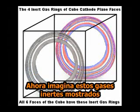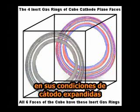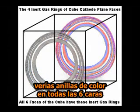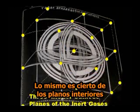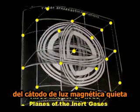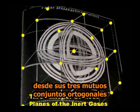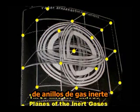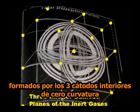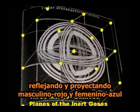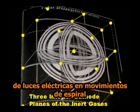Now imagine these inert gases as pictured in their expanded cathode conditions bounding all six faces of the cube — you would see colored rings on all six faces. The same is true of the interior cathode plane of still magnetic light. And here we see them creating a sphere from the three mutually orthogonal sets of inert gas rings formed by the three interior cathode planes of zero curvature, which act as internal mirrors to project and reflect the male red and female blue electric spiraling lights of motion.